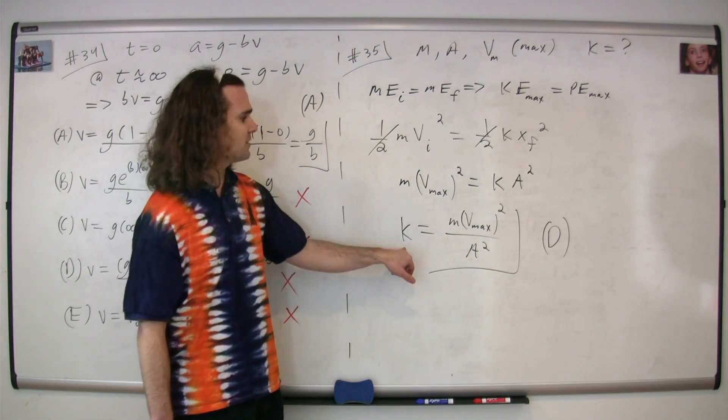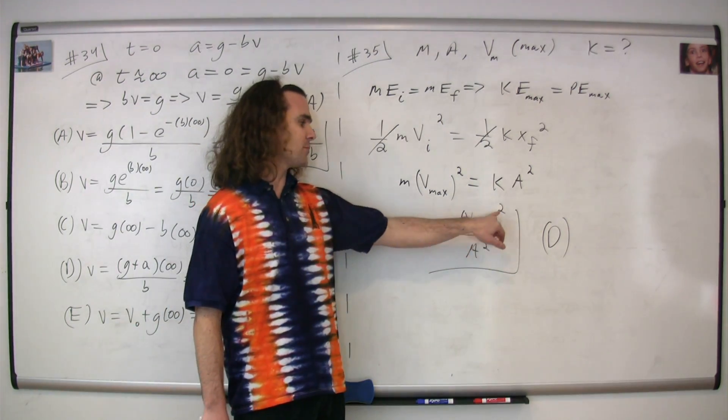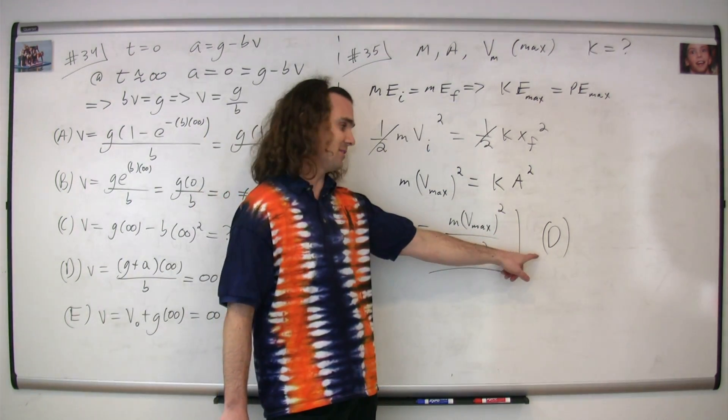And we get that the spring constant is equal to mass times the velocity maximum squared divided by the amplitude squared. The correct answer is D.